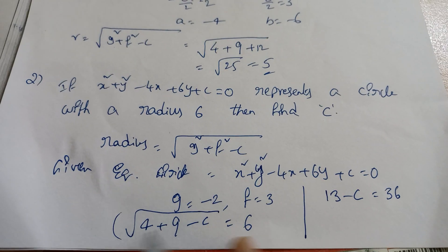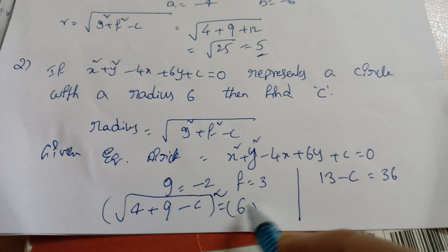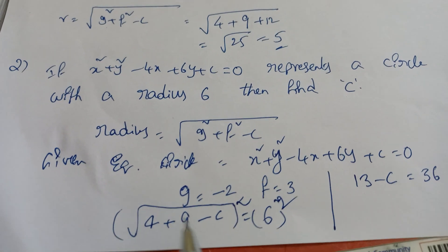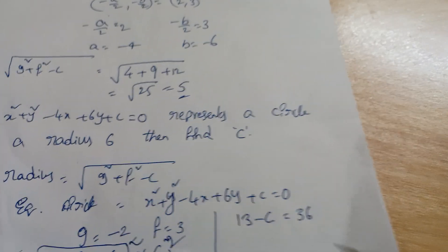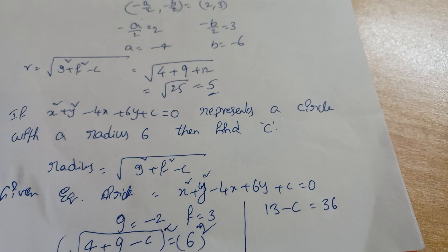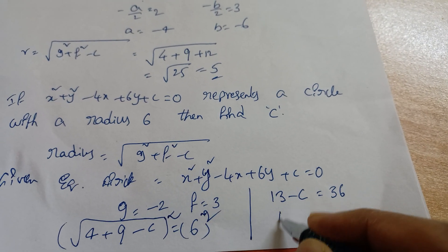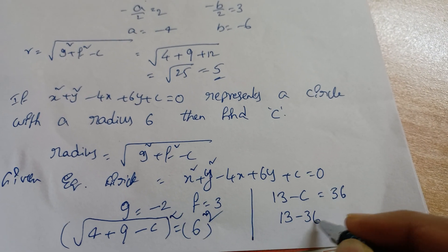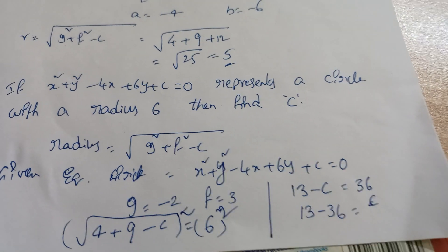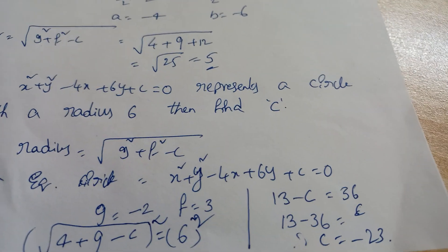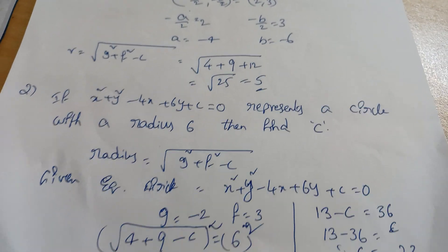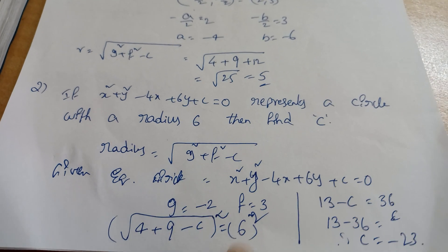Squaring on both sides cancels the square root: 13 − c = 36. Rearranging: c = 13 − 36 = −23. So c = −23. Easy — when radius is given, just equate and solve.